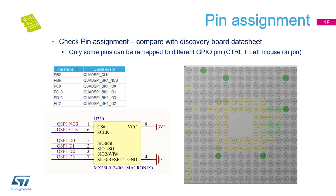Another important part is pin assignment. You need your schematic and must define the right pin placement. In the CubeMX perspective, you can remap a pin to a different GPIO by pressing CTRL and left mouse click on the pin.